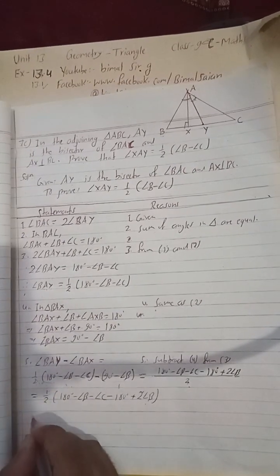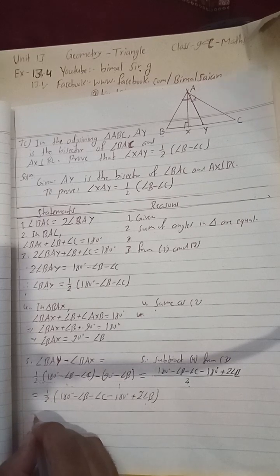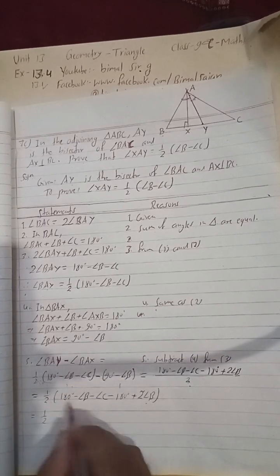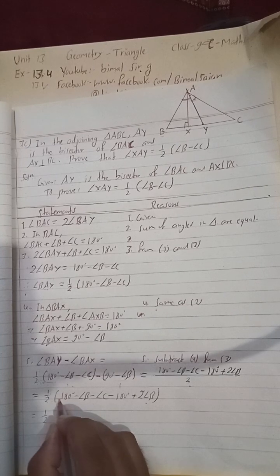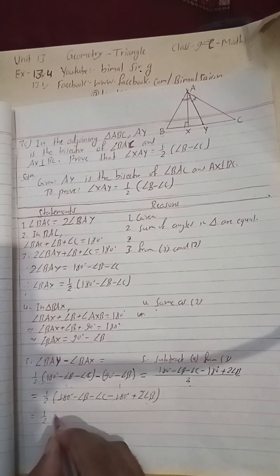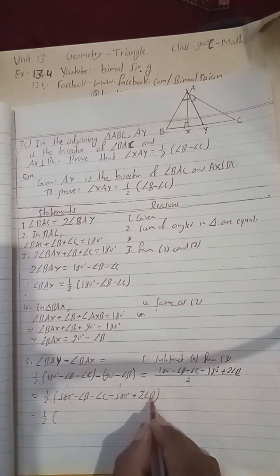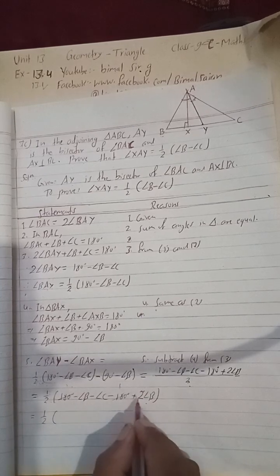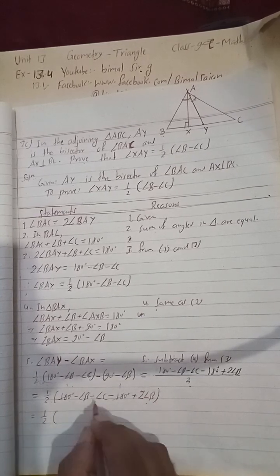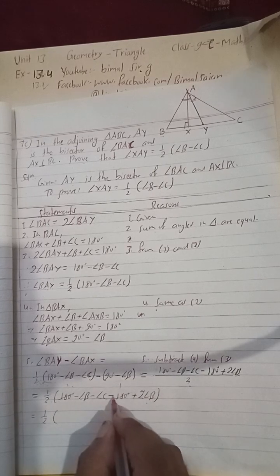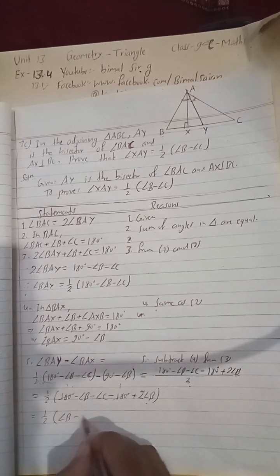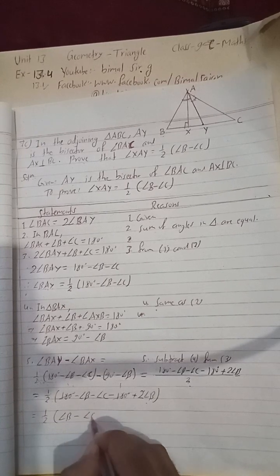Solving: one half of (180 degrees minus angle B minus angle C minus 180 degrees plus 2 angle B). The 180 terms cancel, leaving one half of (2 angle B minus angle B minus angle C), which simplifies to one half of (angle B minus angle C).